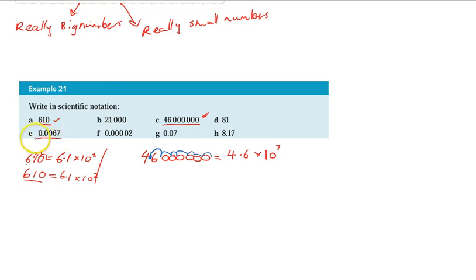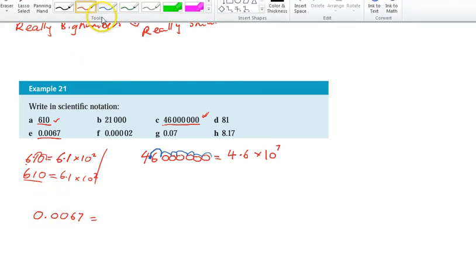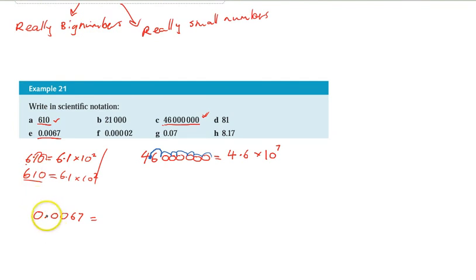So if you look at this one it's a very small number 0.0067. Now if we're going to write that in scientific notation you can see that I need to move the decimal place the other way. 1, 2, 3. That makes 6.7.